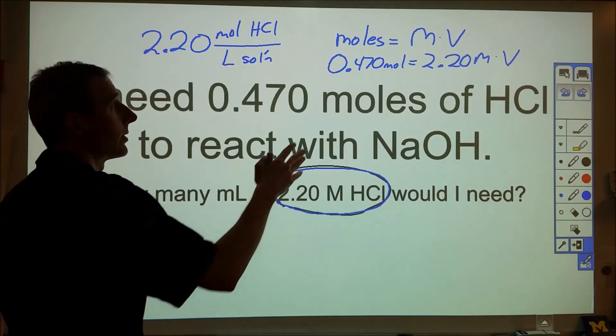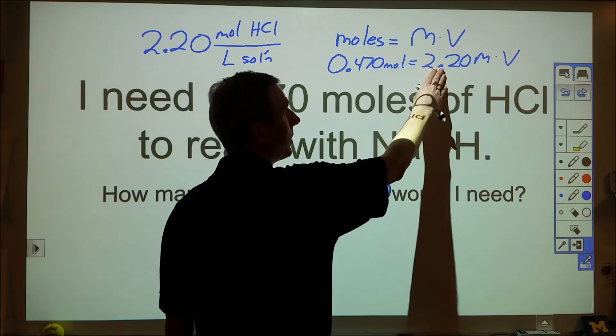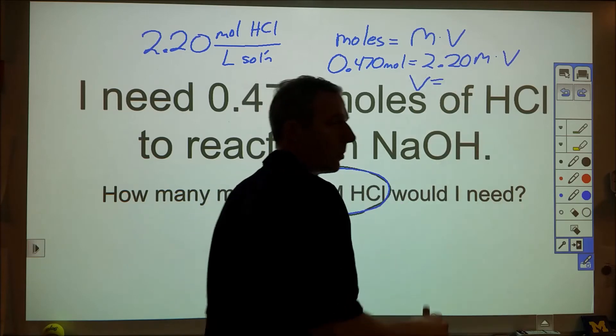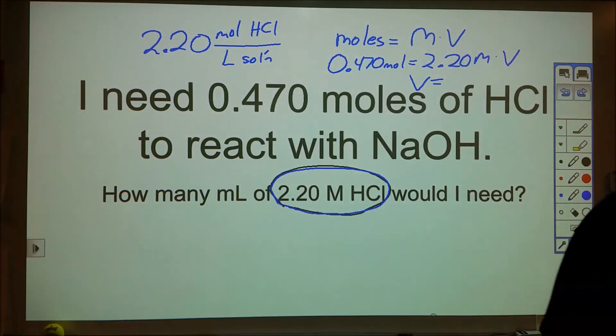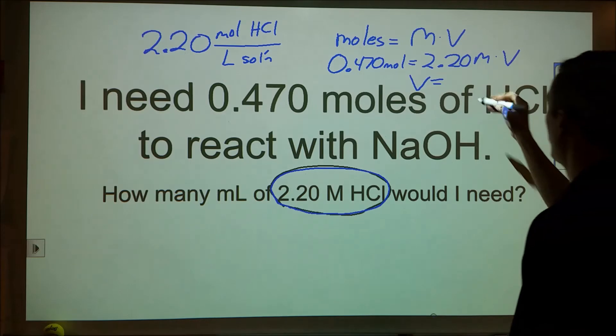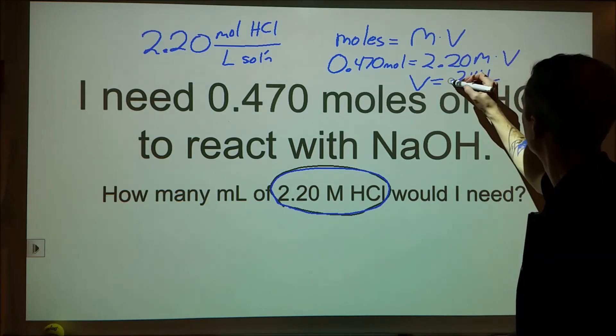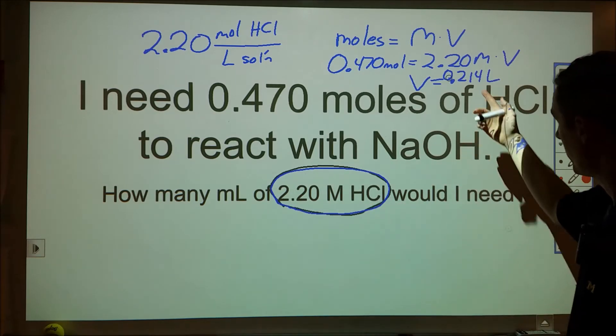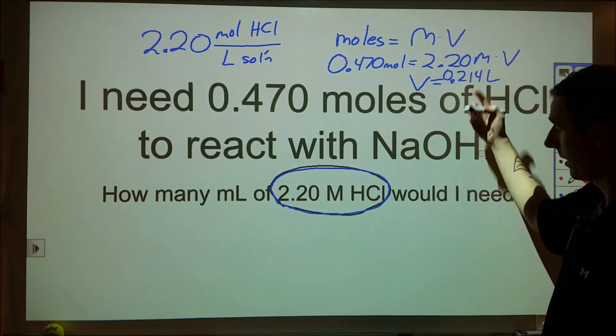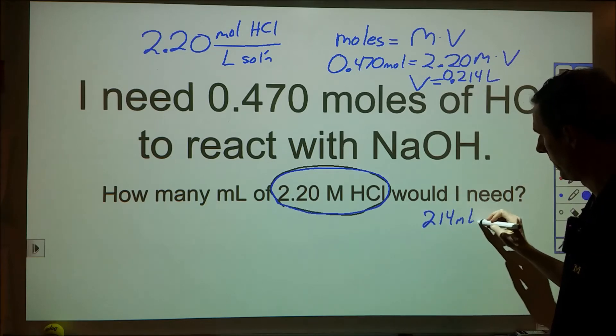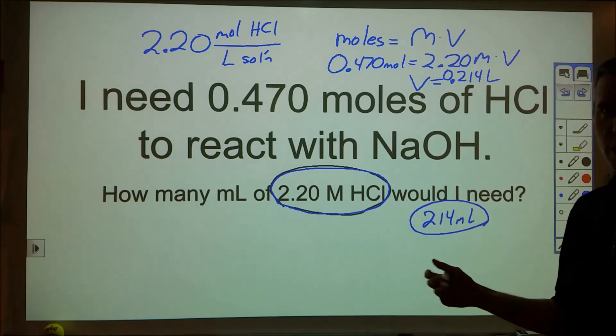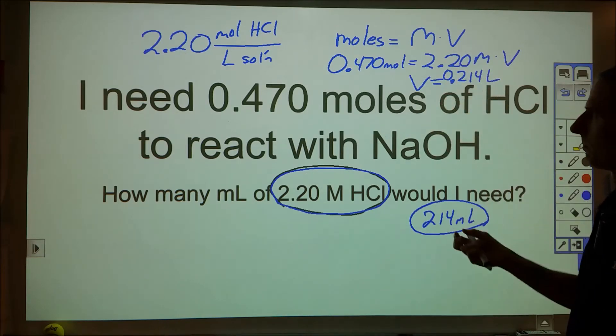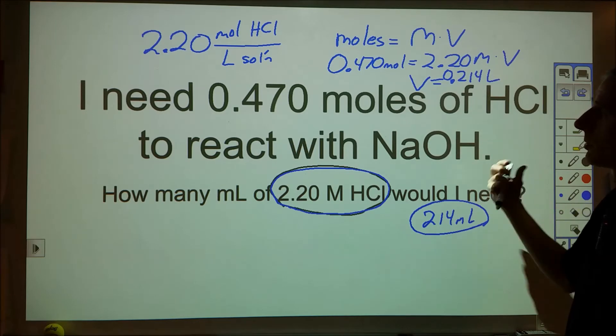And so if I plug in here that I need 0.470 moles equal to 2.20 molarity times the volume, then what I can do is say, okay, well, this is pretty straightforward here. If I take this and divide by 2.20, I'll end up with my volume, which in this case ends up being 0.214 liters. And then here it says how many milliliters is that, and so 0.214 liters times 1,000 would be 214 milliliters necessary to carry out that reaction. And so I can use this concentration pretty easily here to do some figuring within these.